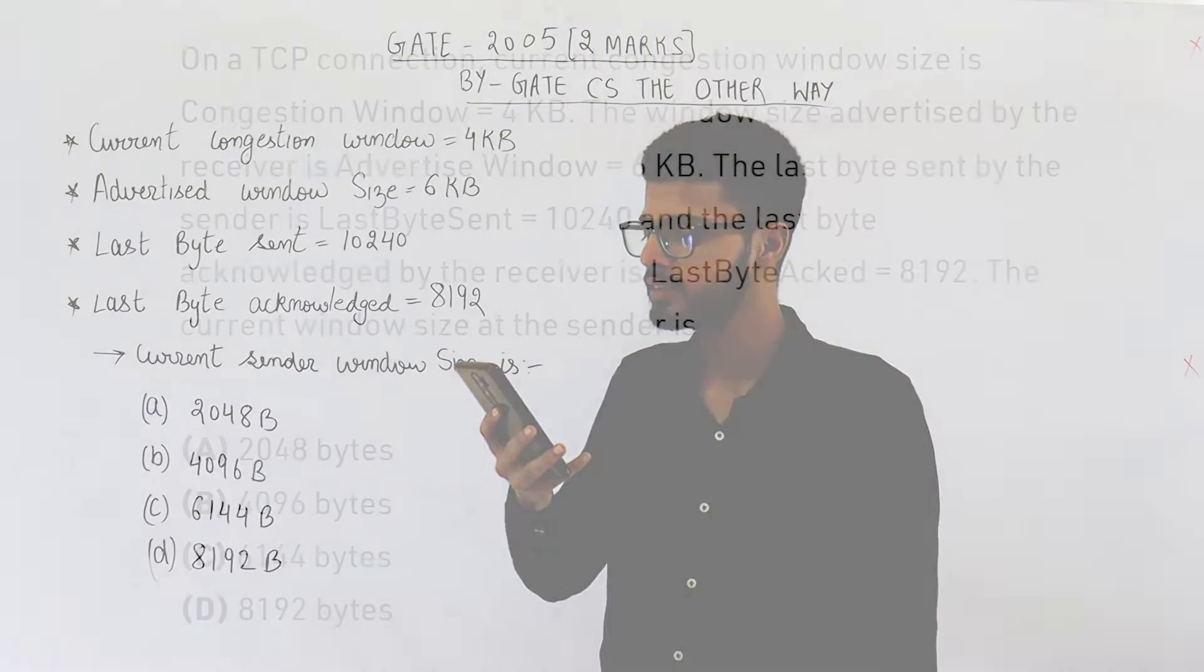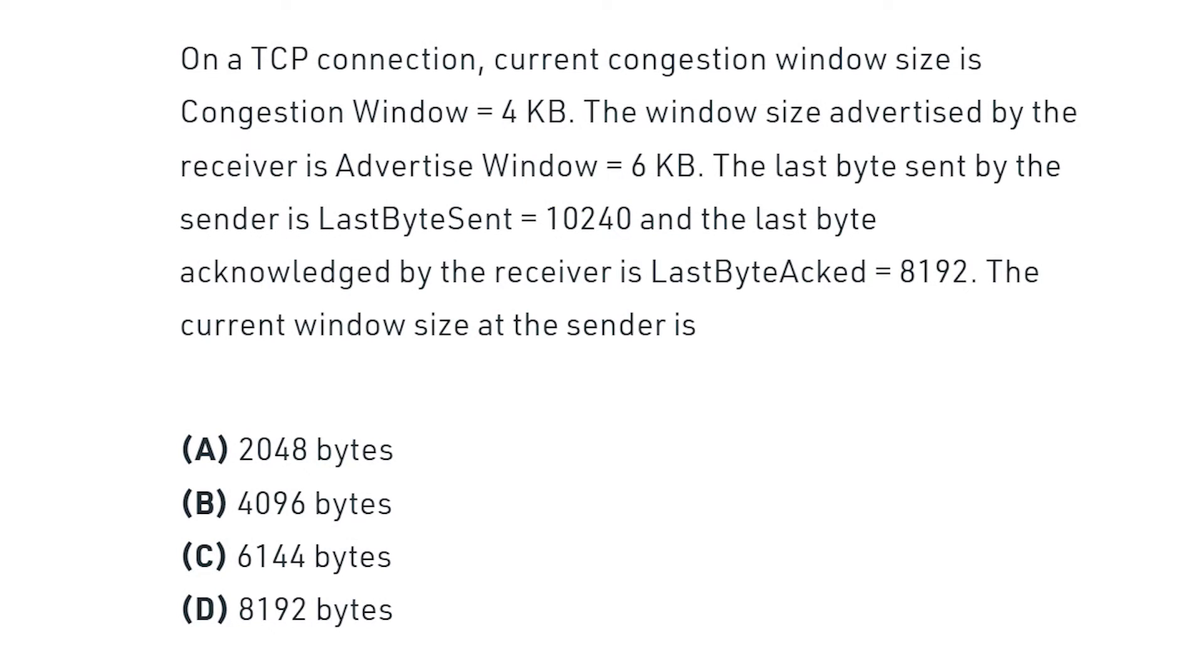It says, on a TCP connection, current congestion window size is congestion window equal to 4 KB.